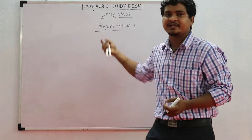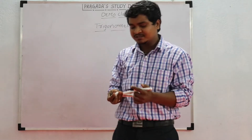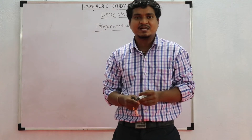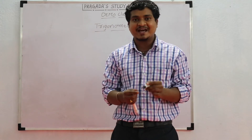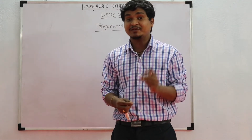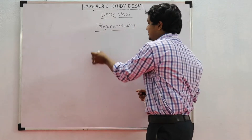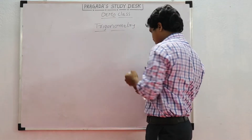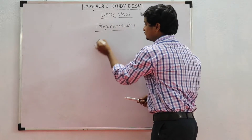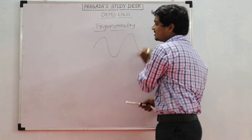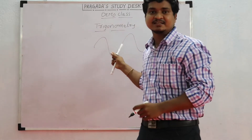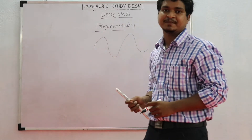The use of trigonometry is that we can measure the heights of buildings, the heights of mountains, and also the heights of tides in the oceans.